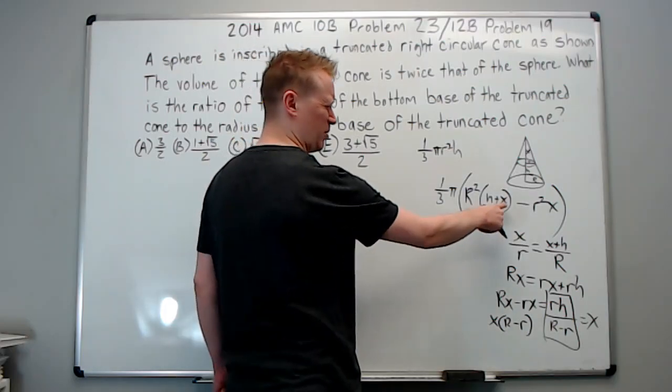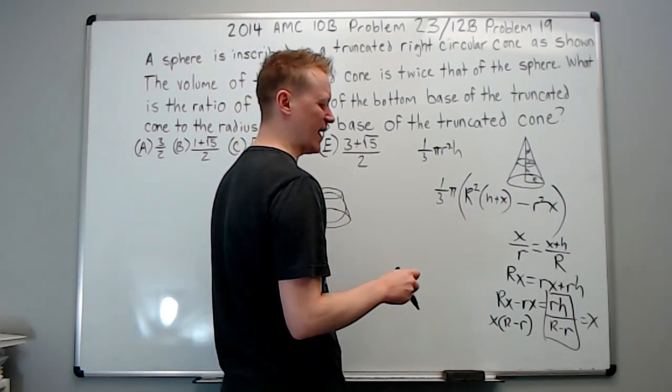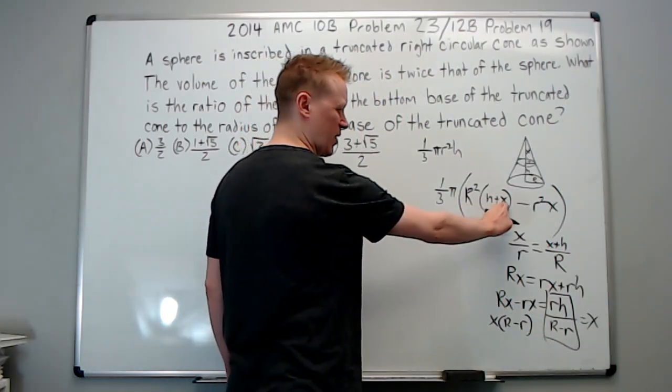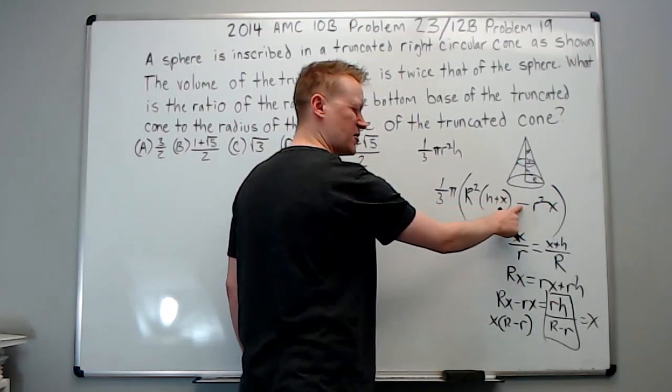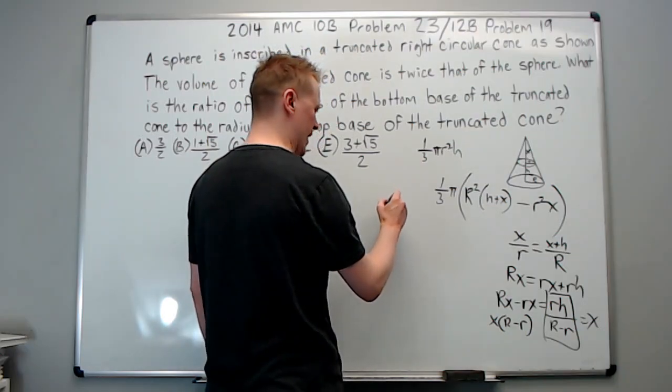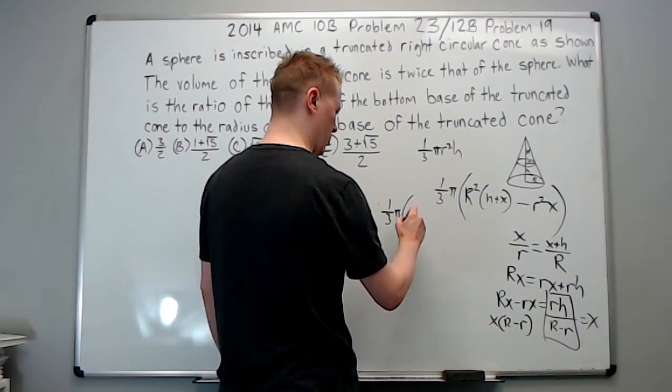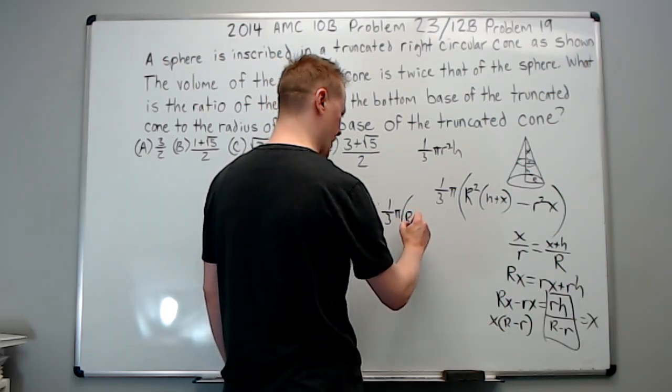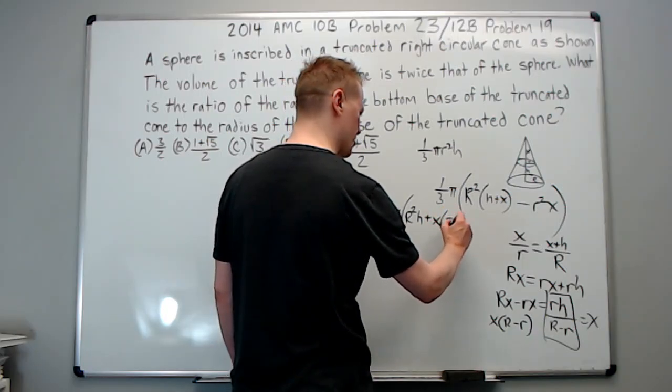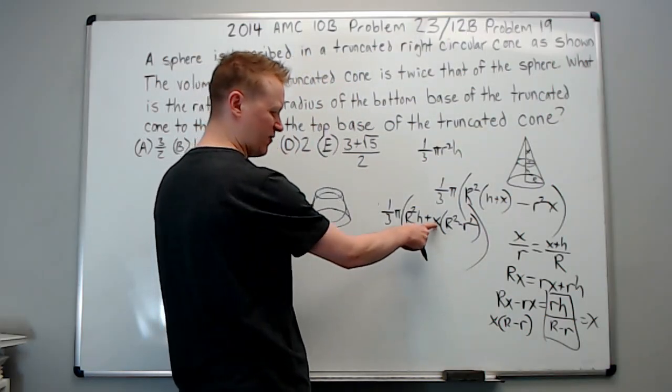So we kind of don't want to plug that in here. And here, it looks like it's going to get a little hairy. So maybe we can get an idea. Look at this denominator, big R minus little r. If I've got big R squared x and little r squared x with a minus sign, we can factor out the x and do difference of squares. Let's do that. So we get 1/3 pi times, it's going to be R squared h plus x times R squared minus little r squared.